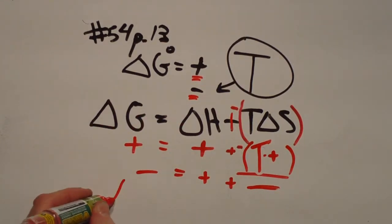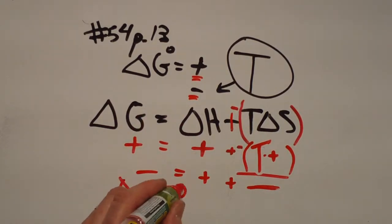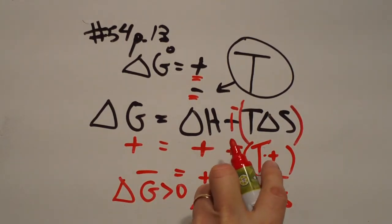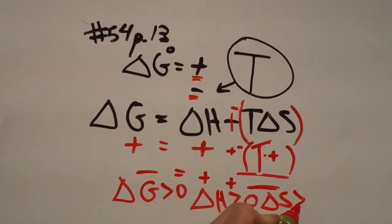the original state had to be delta G was greater than zero or positive. Delta H had to begin greater than zero or positive. And also delta S at least had to begin greater than zero too.